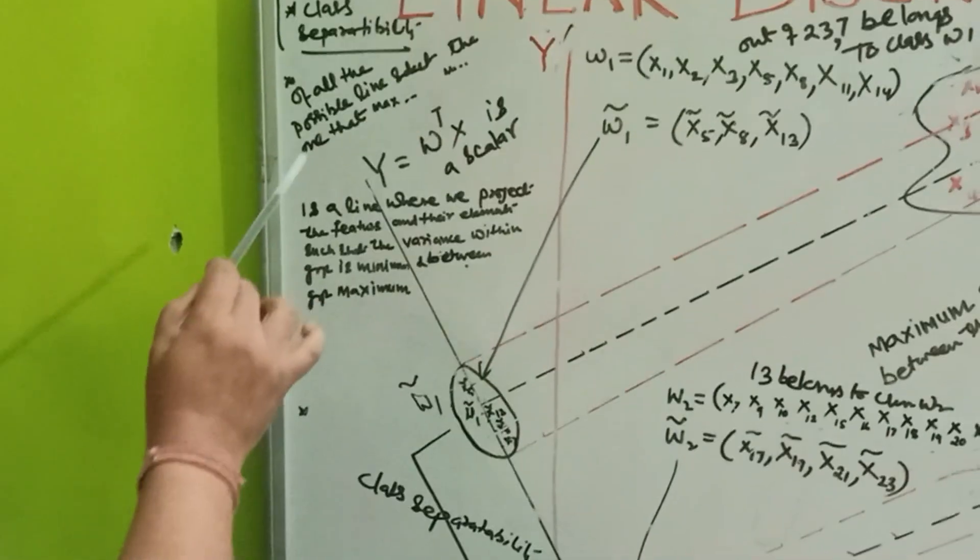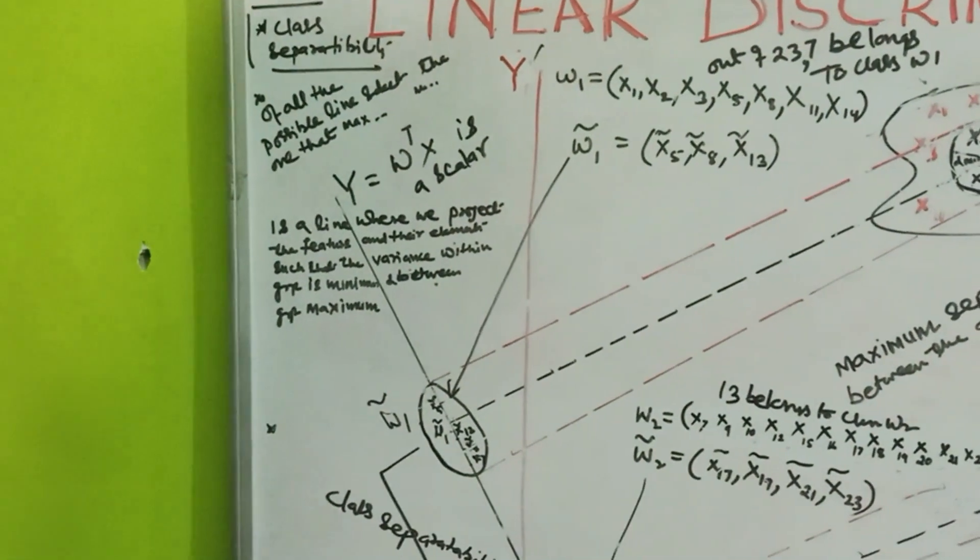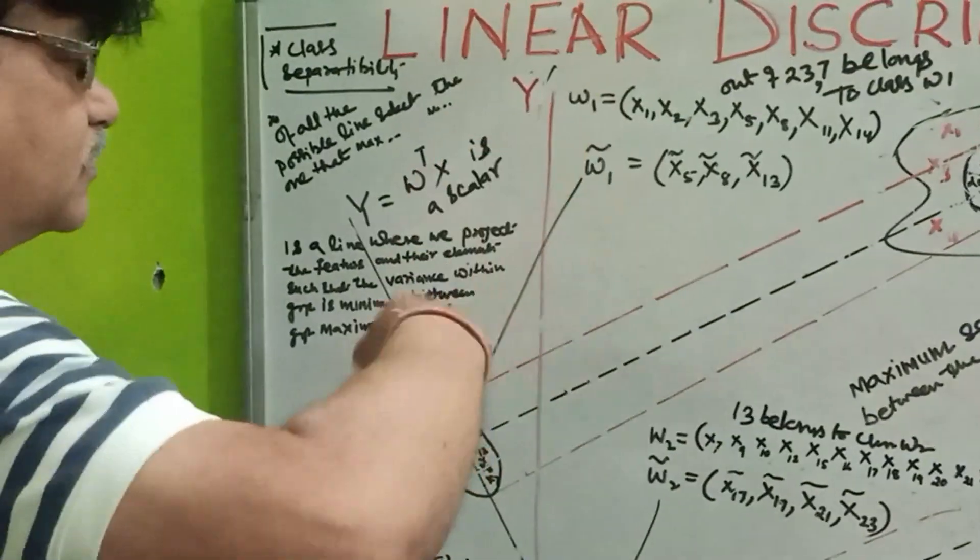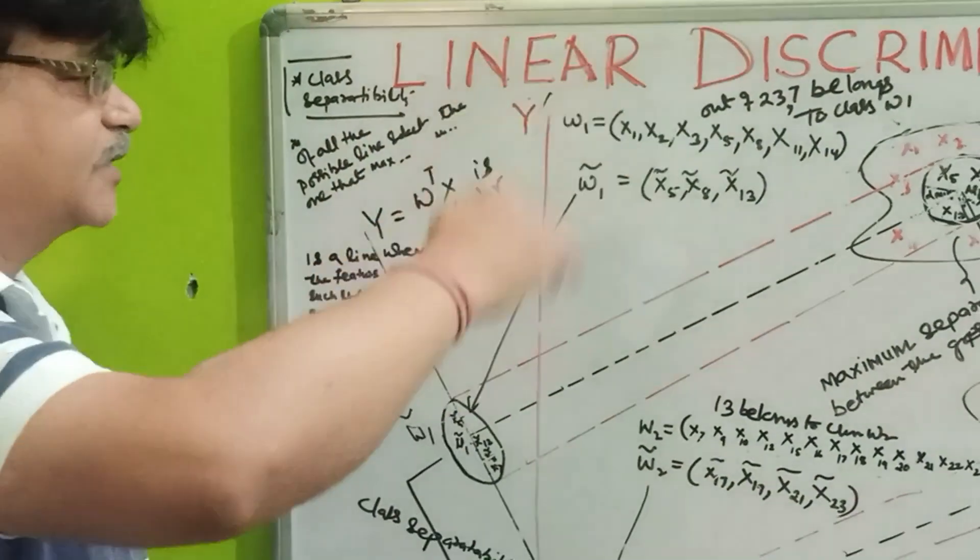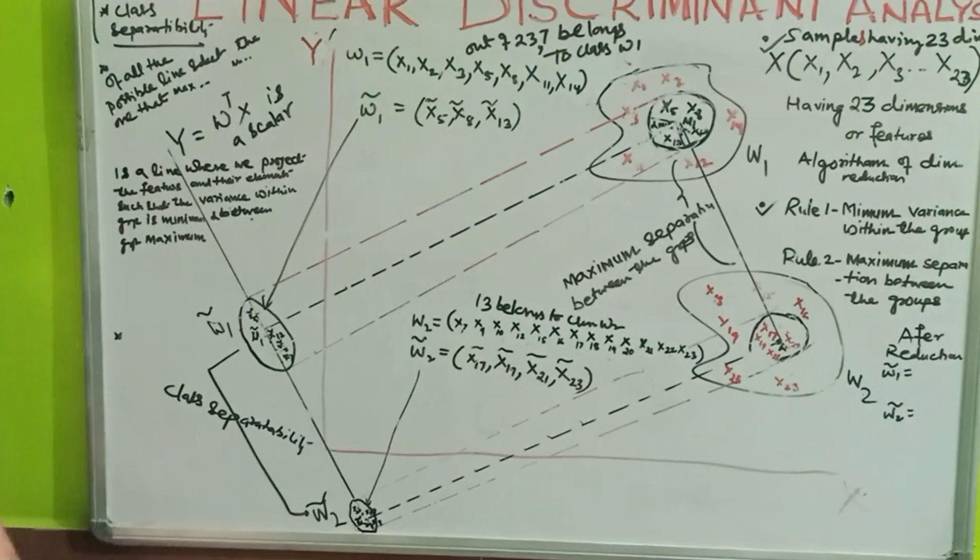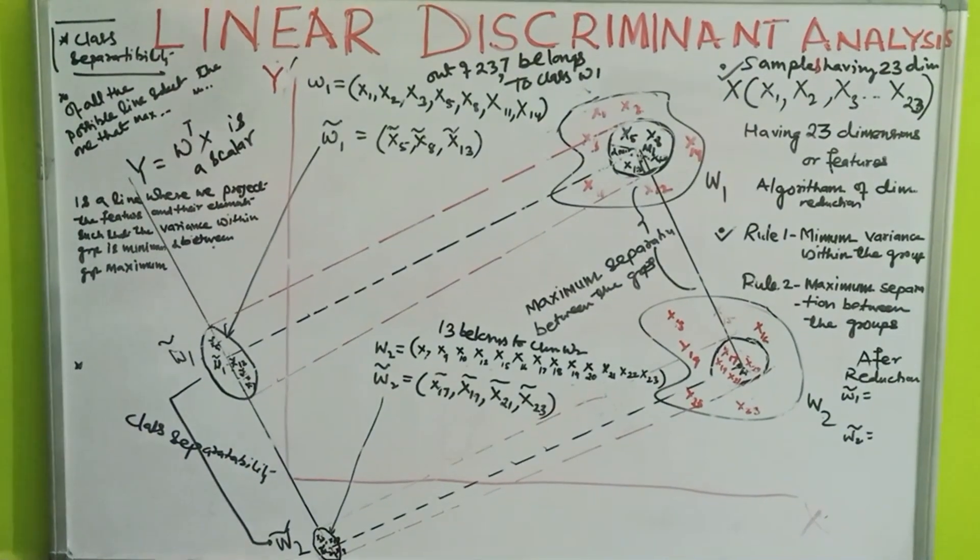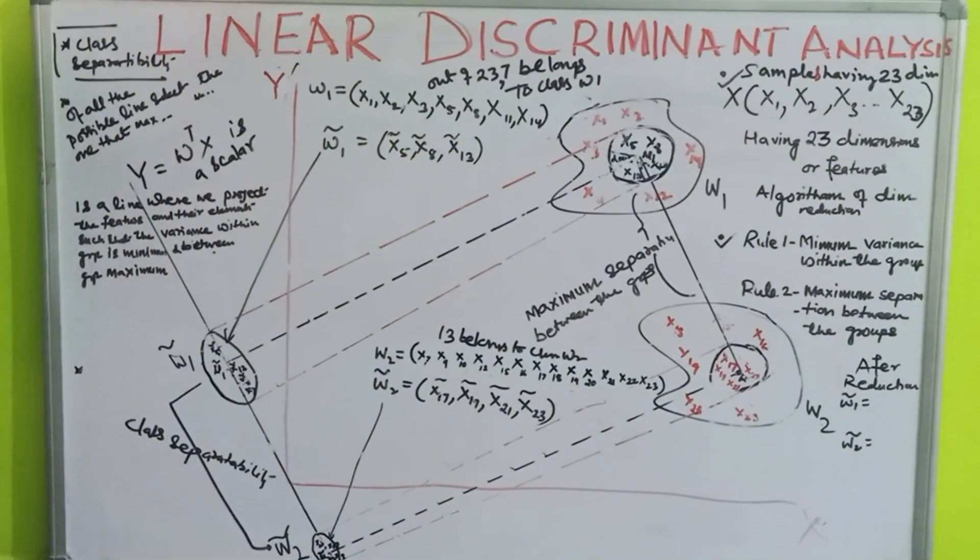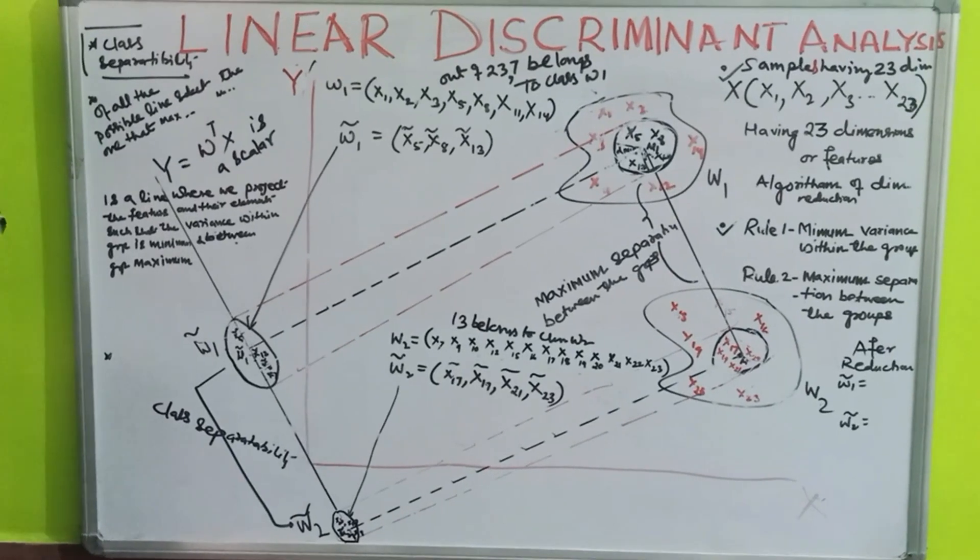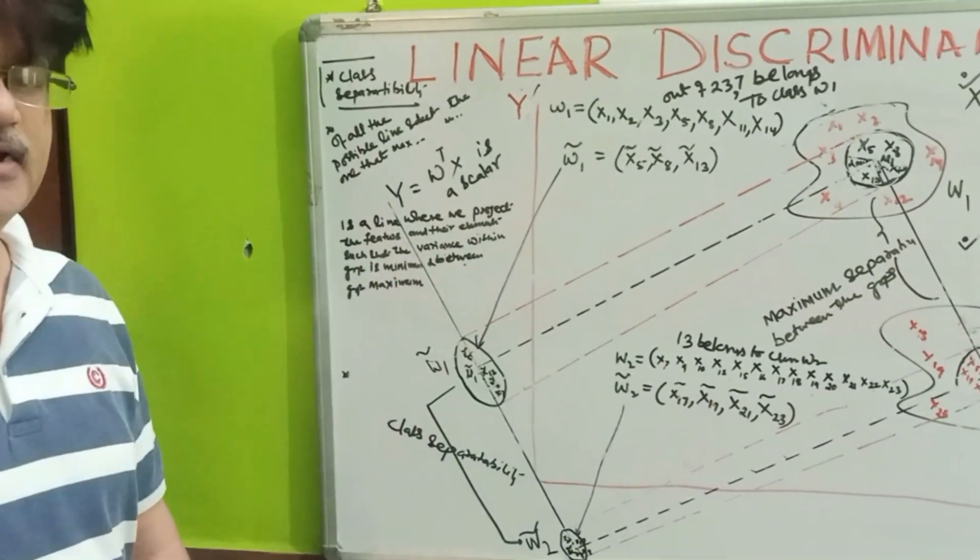In this circle, I have to create a subspace. So, creating a subspace, I mean, let us say, I have a line Y is equal to WTX, which is a scalar, not a vector. So, I am drawing a number of lines, right? WT X1, WT, so many lines passing through 0, 0. Right. So, Y is equal to WTX, where WT is a transpose. So, what this line will represent? And this line has all the features. And their elements are such that the variance within the group is minimum and between the groups is maximum. That is my rule.